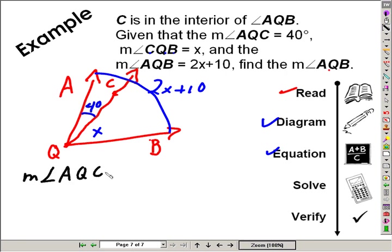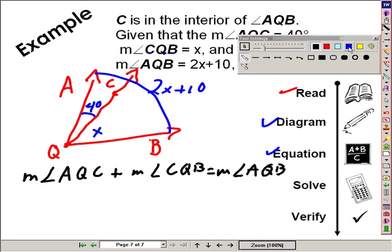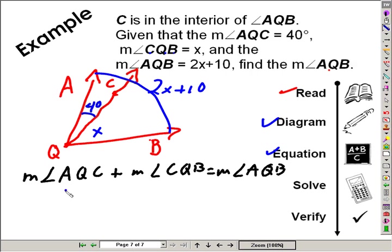That is, the measure of angle AQC plus the measure of angle CQB will equal the larger angle, the measure of angle AQB. So by substituting the information we have into that, we'll get the equation: 40 plus x will equal AQB, the larger angle, 2x plus 10.